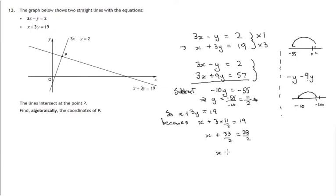38 halves. So we're dealing with halves now. 38 of them minus 33 of them. That'll leave you with 5 of them. Now we've been asked for the coordinates of point P. P is the point x coordinate 5 over 2, y coordinate 11 over 2.